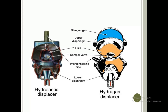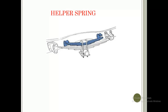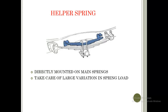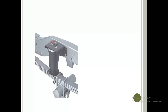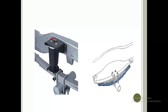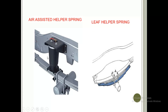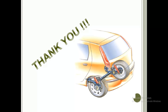The hydroelastic displacer and the hydrogas displacer are shown here for comparison. A helper spring is also shown, directly mounted on the main spring. It takes care of large variations in spring load — the blue component indicates the helper spring. During light loads, only the main spring is active; as the load increases past a particular fixed value, both springs become active together. This image also shows an air-assisted helper spring with the actuator fixed and the leaf helper spring arrangement.